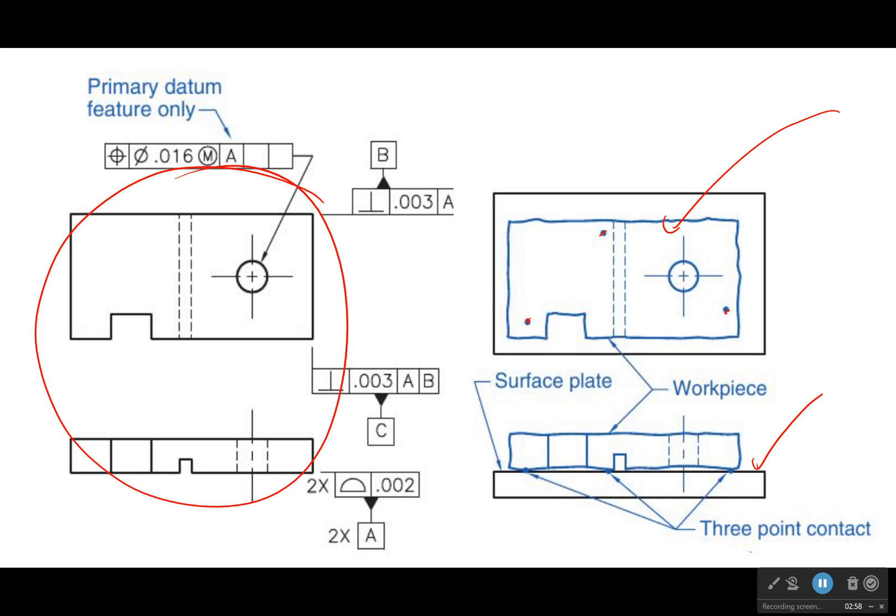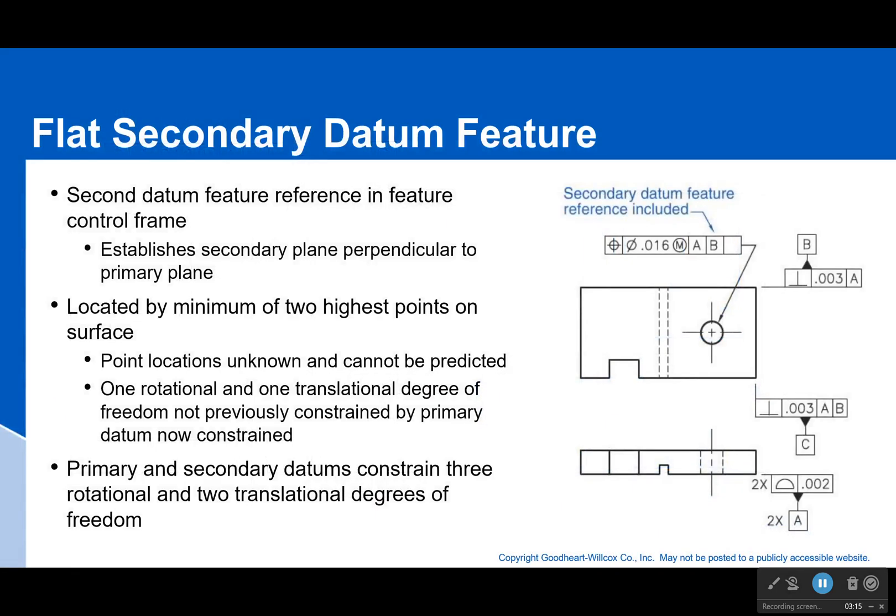And my part is going to be sitting on the highest three points. Right there: 1, 2, and 3. Those are the three points that we can contact. Those make our true geometric counterpart. Those are what we get our theoretical datum from. And then we connect those by laying them flat onto this surface right here.